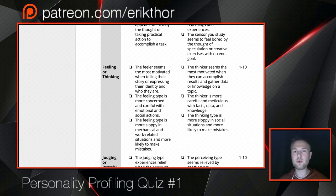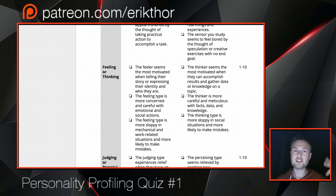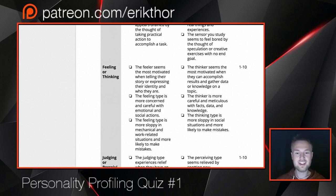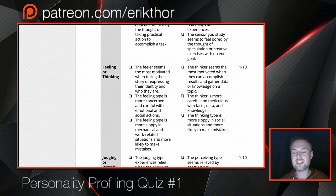The thinking type, on the other hand, puts hard work and effort into facts and data. They seem most motivated when sharing objective information about their surroundings, and are most careful with facts — double-checking to make sure things are right and objective. When accuracy isn't required, they become more sloppy and make more mistakes, just as the feeling type can become slightly sloppy in mechanical and work-related situations.